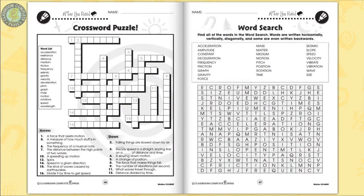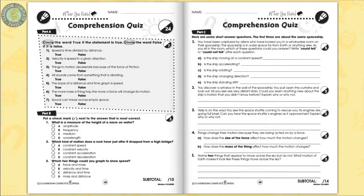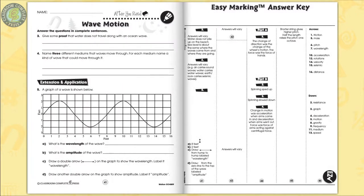Differentiated comprehension skills are measured by a crossword and word search puzzle, then a three-part comprehension quiz. The easy marking answer key works by lining up perfectly with the matching question pages.